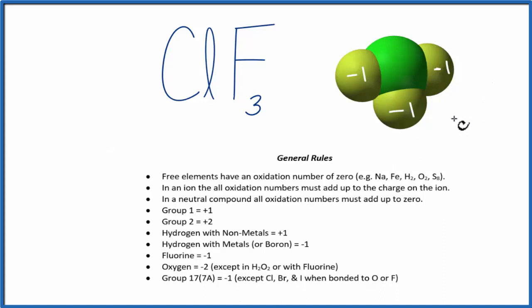That's actually fairly simple, because all of the oxidation numbers in a neutral compound have to add up to zero. So we have minus one, minus two, minus three. So minus three plus three equals zero. The oxidation number on the chlorine in ClF3 is going to be plus three.